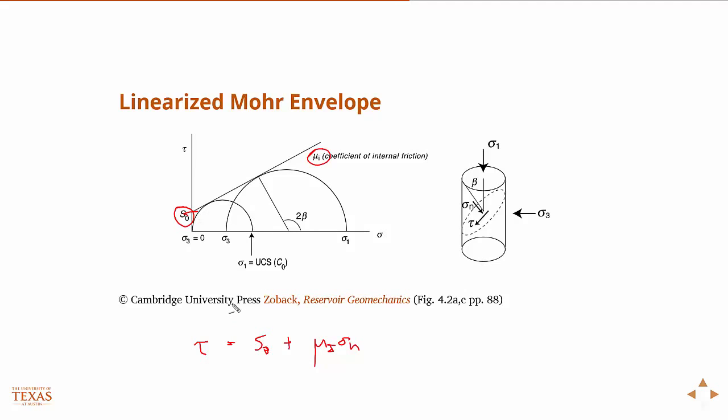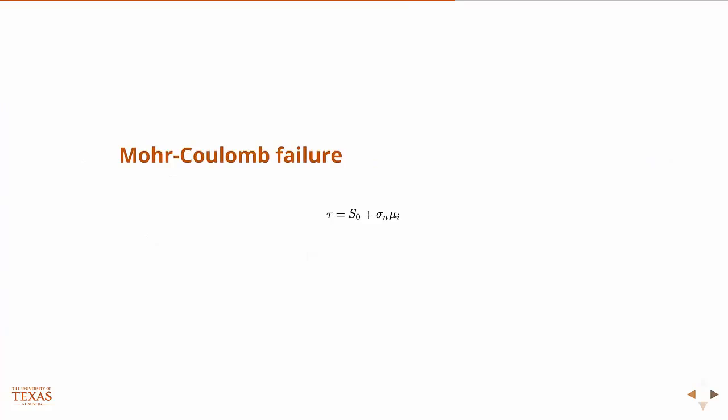But the cohesion is not something we can directly measure. We can infer it through a series of these triaxial tests. Or if we have an unconfined compressive strength, we can infer it just based on the geometry. There's a relationship based on the geometry and the internal friction angle between the unconfined compressive strength and the cohesion. There's the equation again. There's the relationship between the unconfined compressive strength and the cohesion.